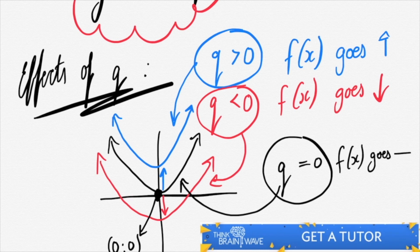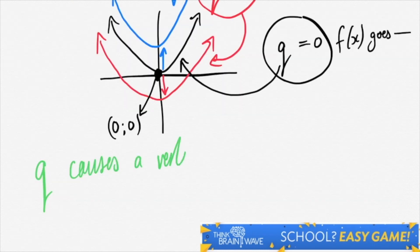Therefore it's (0, 0). So q causes a vertical shift in the function.